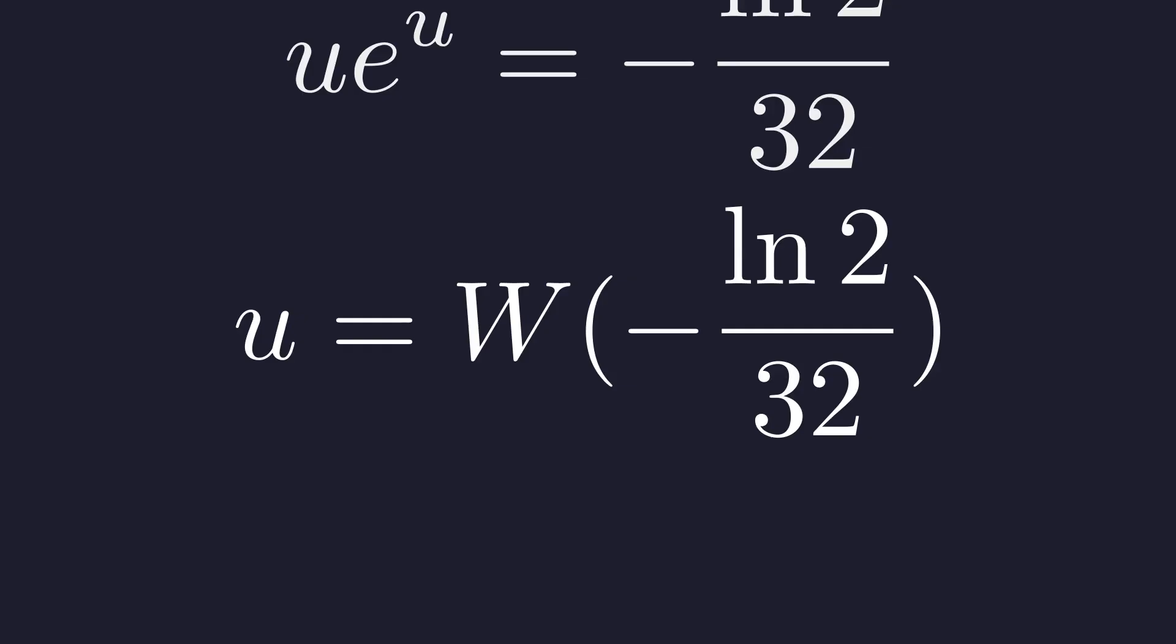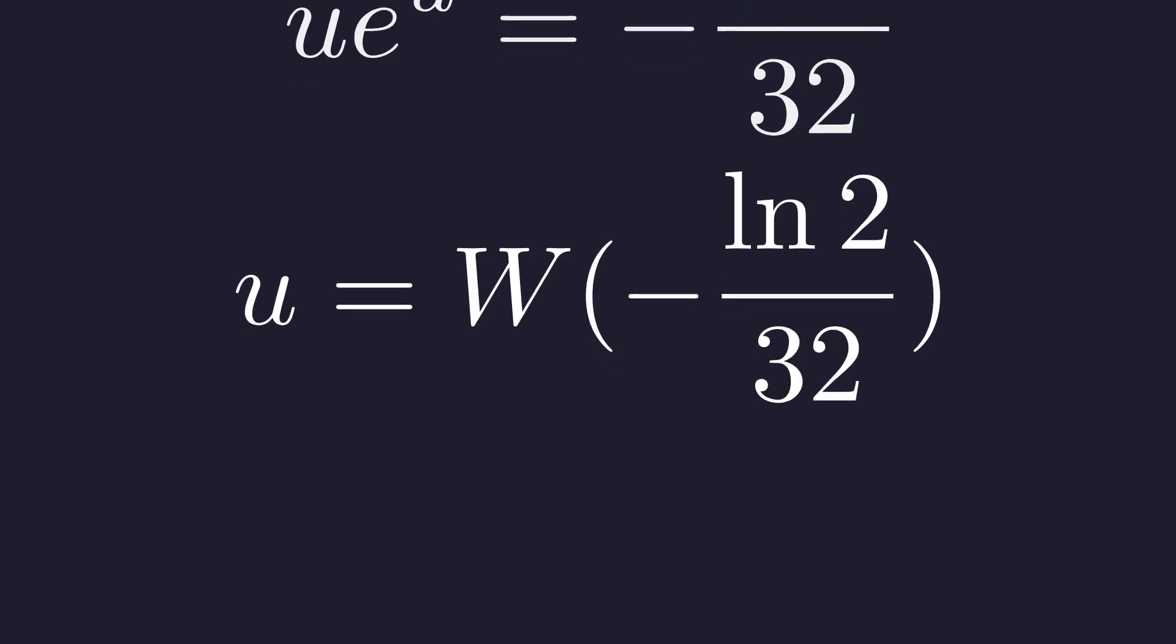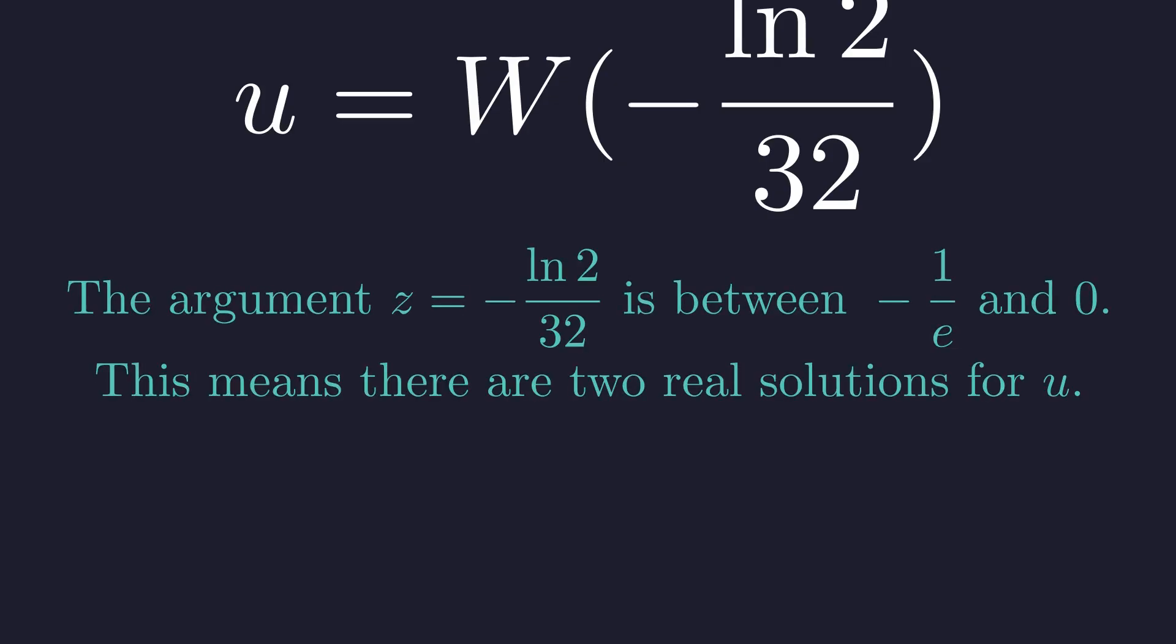By definition, u is equal to the Lambert W function of the right-hand side. A key property of the Lambert function is that for arguments between negative 1 over e and 0, it has two real valued branches called w naught and w minus 1. Our argument is in this range.